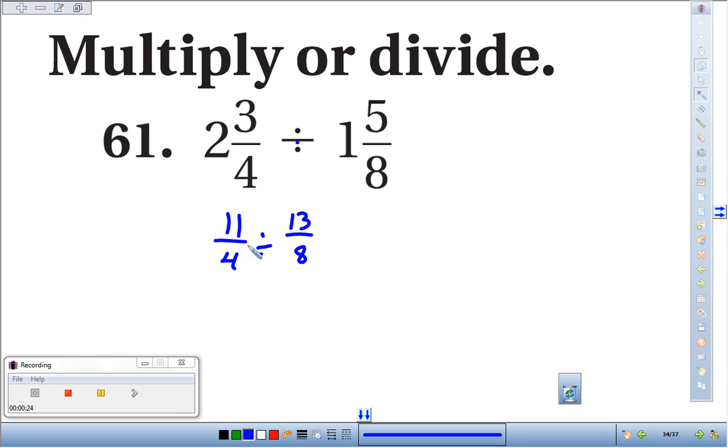Nice thing is, when you're multiplying and dividing, you don't need a common denominator. But then the pain in the butt is dividing by 13 eighths. Dividing by a fraction is a royal pain.